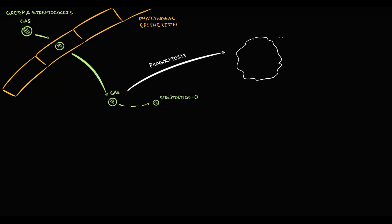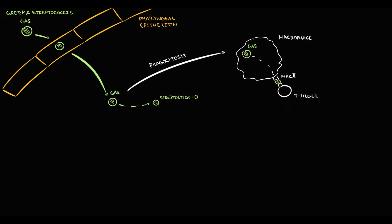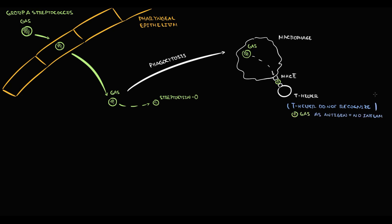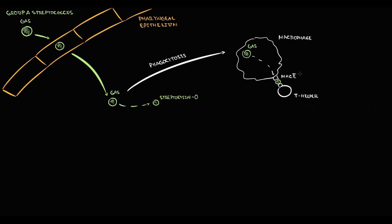At the same time, antigen-presenting cells phagocytose Streptococcus organisms and present small particles of Streptococcus on MHC2 receptors to T-helpers. The logic is that antigen-presenting cells want to determine whether Streptococcus is normal material or something pathogenic. T-helpers scan the particles, and in normal conditions they do not recognize the particles as antigen, so there will be no inflammation. However, some people have MHC2 receptors produced based on the HLA-DR7 allele, and in this case inflammation will most probably develop.